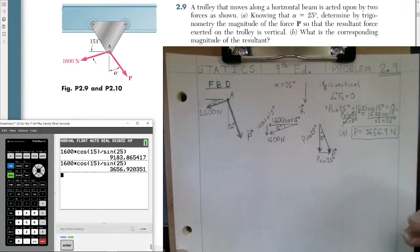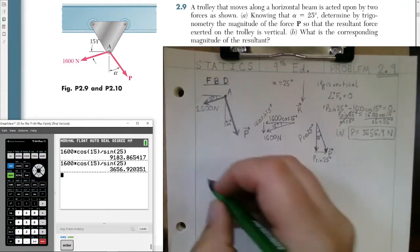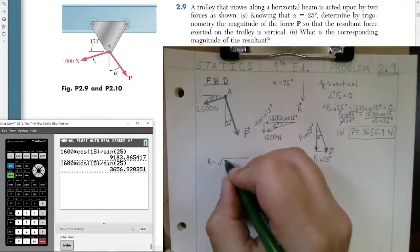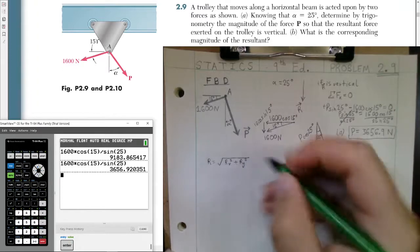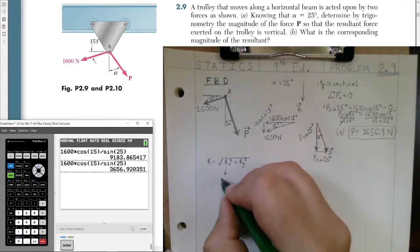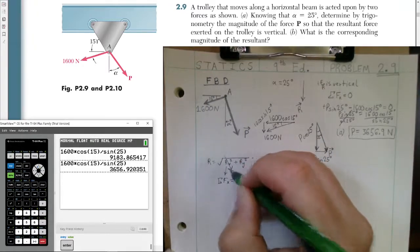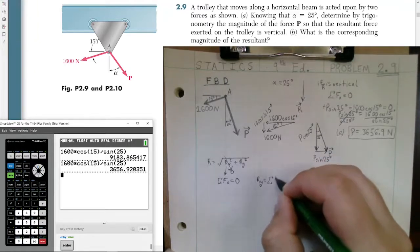Now, if we return to part B, remember part B asks us, what is the corresponding magnitude of the resultant? So we're asking for magnitude of the resultant. We recall our equation. The magnitude of R is equal to, using the Pythagorean theorem, the Rx component squared plus the Ry component squared. And again, the Rx component is just the sum of all the forces in the x-direction as the resultant, which we know is zero. So this component will go to zero. Our Ry is simply the sum of forces in the y-direction. This will not be zero.